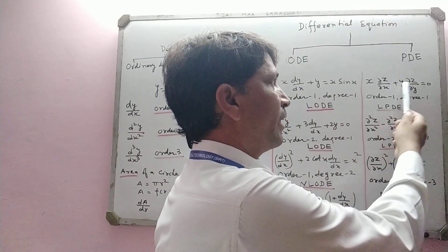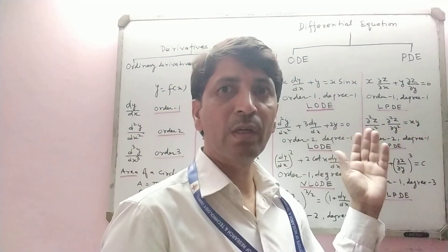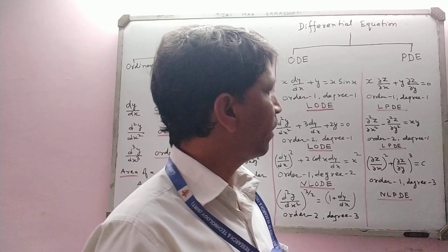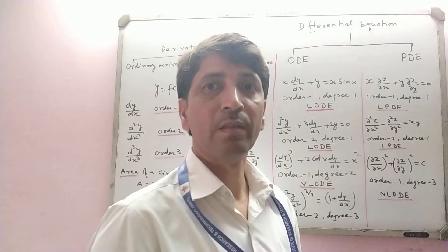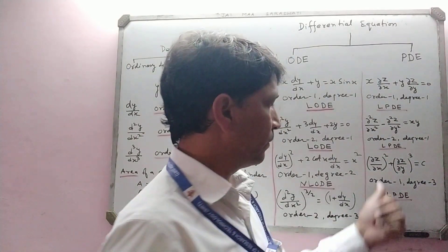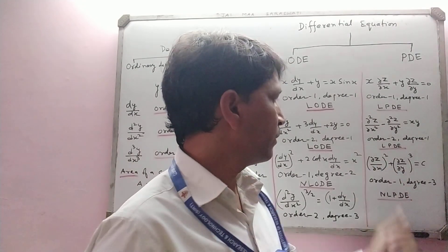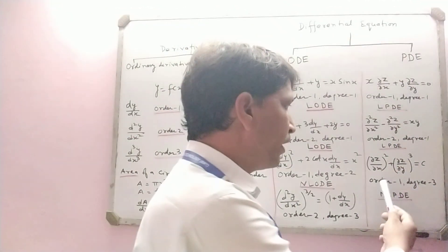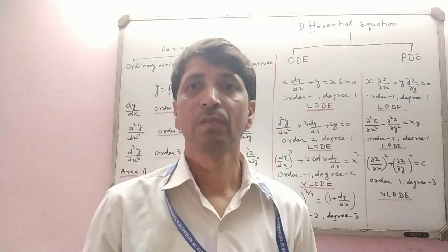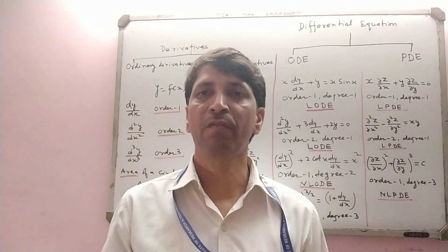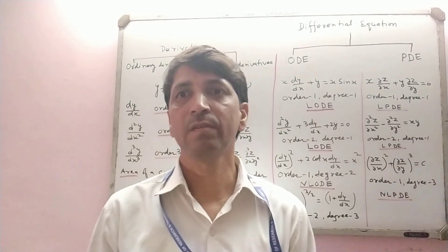Similarly, for partial differential equations: ∂z/∂x and ∂z/∂y are both derivatives of order 1, so order is 1 and degree is 1 — this is a linear PDE. A second-order linear PDE has order 2 and degree 1. If a PDE has partial derivatives of order 1 but the highest power is 3, then its degree is 3 and it is a nonlinear PDE. In this way, you should be able to define a differential equation, its type, order, and degree.